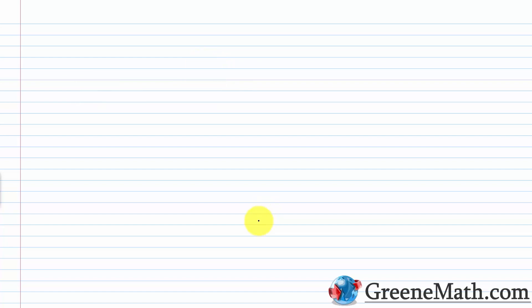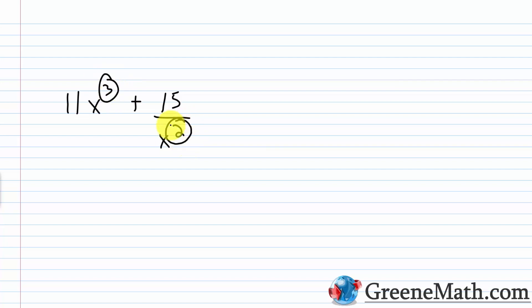As another example of one that's not a polynomial, let's say we had 11x cubed plus 15 over x squared. This is not a polynomial. You have a variable in the denominator — and remember, I can write 15 over x squared as 15 times x to the power of negative 2. That exponent is negative, so it is not a non-negative integer. It's a negative integer, so we have a problem. That's not a polynomial.